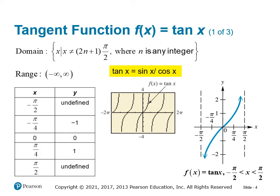Tangent will also equal 1 or negative 1 where sine and cosine have equal values, possibly with different signs. That happens at 45 degrees, denoted by pi over 4 and negative pi over 4, which is the 45 degree reference angle in quadrant 4. Tangent is an increasing function, periodic like all trig functions, repeating between asymptotes wherever cosine equals zero in that period.